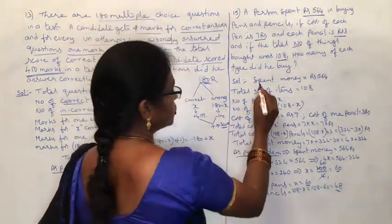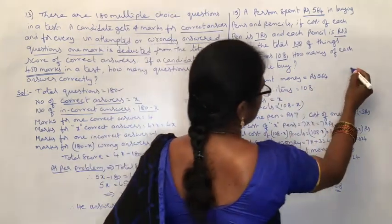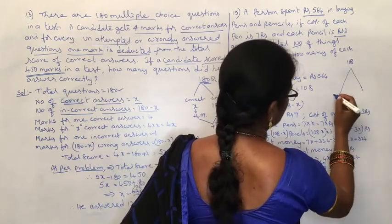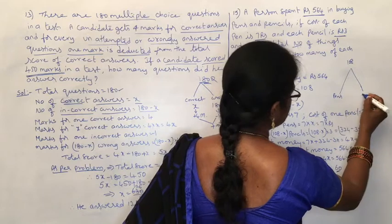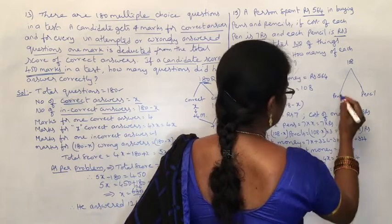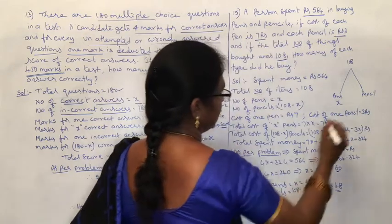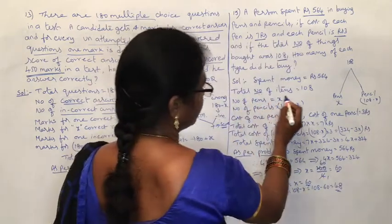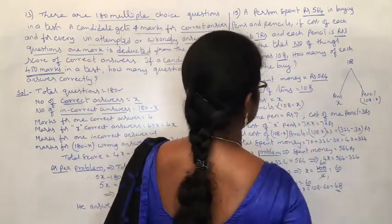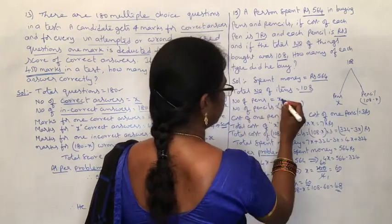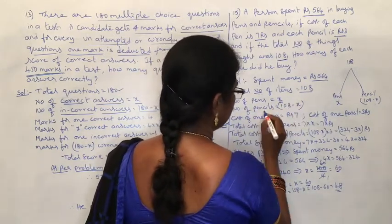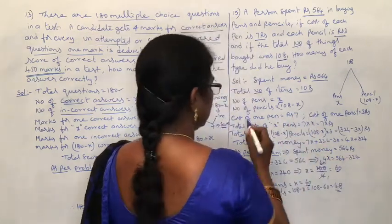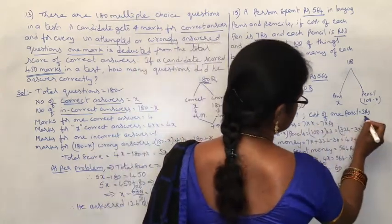Total money spent: 564 rupees. Total articles: 108, consisting of 2 types — pens and pencils. Suppose number of pens is x, then number of pencils is 108 minus x, because total minus pens gives pencils. Cost of 1 pen is 7 rupees and cost of 1 pencil is 3 rupees.